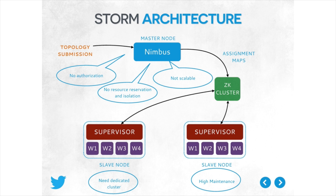Secondly, there was no resource reservation or isolation. We had to rely on host isolation to provide resource isolation. If you wanted guaranteed resources, you needed to specify how many hosts you wanted — you could not just say 'I want 3 CPUs or 10 gigabytes of RAM for this container.' You had to specify the whole job needs 10 hosts. It caused great resource waste. Also, Nimbus is a single process responsible for many jobs — scheduling, monitoring, restarting failed jobs, UI, and metrics reporting.